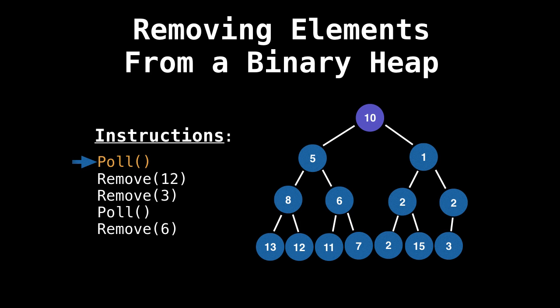So what we do is we look at 10's children, five and one, and we select the smallest. And we swap with the smallest. So 10 would go to one. Make sure you default selecting the left node in case there was a tie.